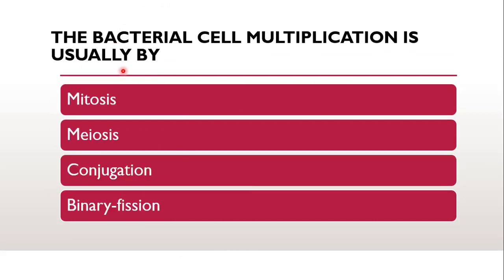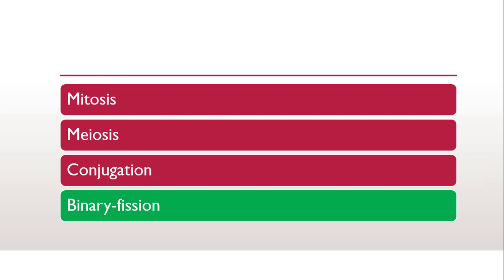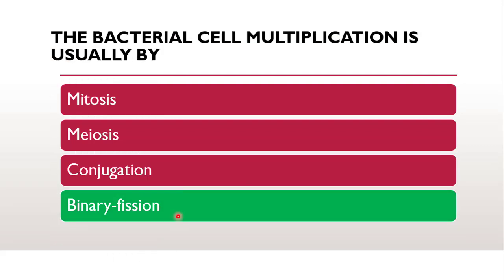Next question: bacterial cell multiplication is usually by — whether it is by mitosis, meiosis, conjugation, or binary fission. The correct answer is binary fission. The cell multiplication is usually by binary fission in bacteria.